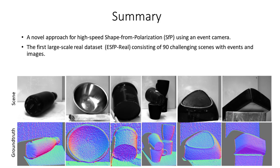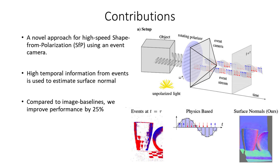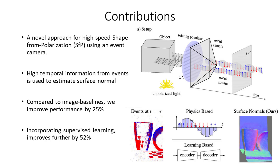Our evaluation is based on the first large-scale dataset for event-based shape from polarization, consisting of 90 scenes with different textures, shapes, and illumination. We propose a novel approach for high-speed shape from polarization using an event camera. High temporal information from events is used to estimate surface normals. Compared to image baselines, we improve performance by 25%. Incorporating supervised learning improves the accuracy further by 52%.